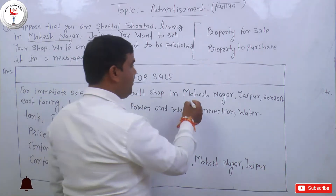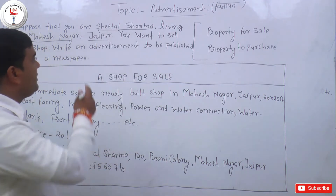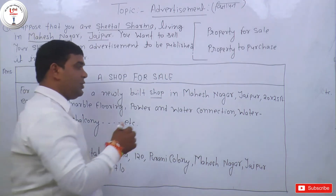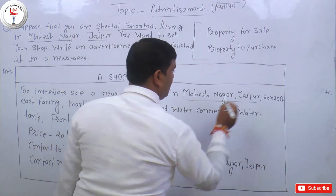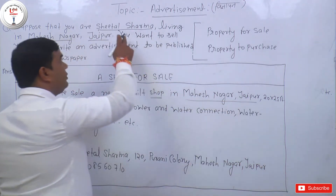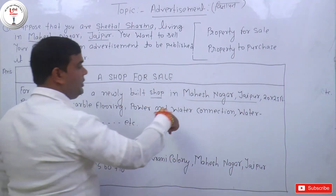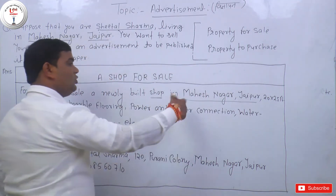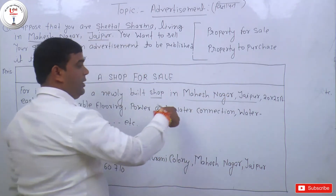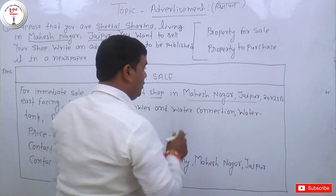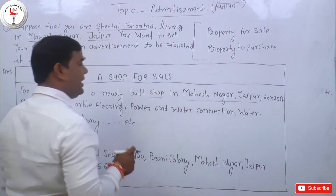Shop kahan hai, yahan bhi aapko likhna hai — in Mahesh Nagar Jaipur. Lekin zaruri nahi hai ki aap yahan Mahesh Nagar Jaipur hi likho, kyunki yeh to aapka residence hai. Dukaan aapki kahi aur bhi ho sakti hai, jaise Vaishali Nagar Jaipur likh diya, ya MI Road Jaipur likh diya — matlab dukaan se sambandhit address aayega.